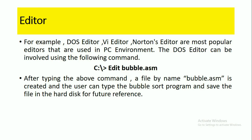The DOS editor can be invoked using the following command: edit bubble.asm. When you type this command, a file named bubble.asm is created, and the user can type the bubble.asm program and save the file in the hard disk for future reference. In this editor, you can enter text, delete text, and move the cursor around the screen.